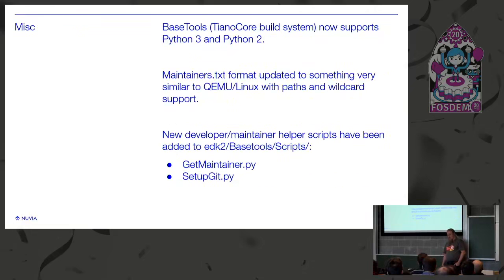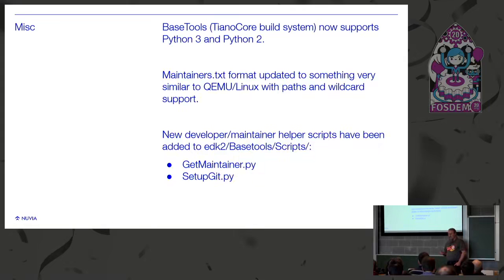We support Python 3 and Python 2 these days, which may or may not be useful depending on how many extensions you get. We fixed the maintainers text format — we used to have a very non-granular way of tracking who was maintaining which part of code. We've now moved to something that looks a lot more like what QEMU and Linux have, and also developed some new scripts to help. We have a get_maintainer.py and I also wrote a setup_git.py to make some common known-good settings for sending things to TianoCore work correctly.